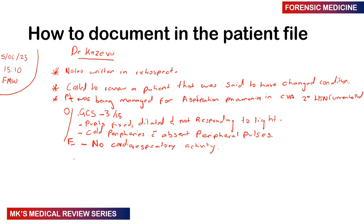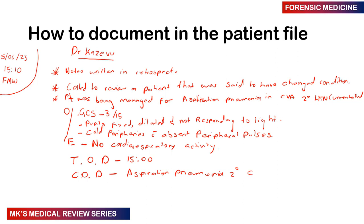The next thing you write is the time of death (TOD): 15:00. You can also write the suspected cause of death — in this case, aspiration pneumonia, secondary to CVA (cerebrovascular accident, write it in full; if hemorrhagic, write hemorrhagic CVA), secondary to uncontrolled hypertension.